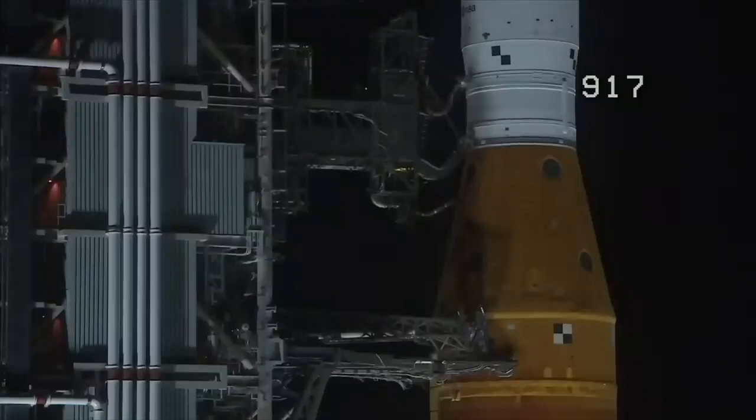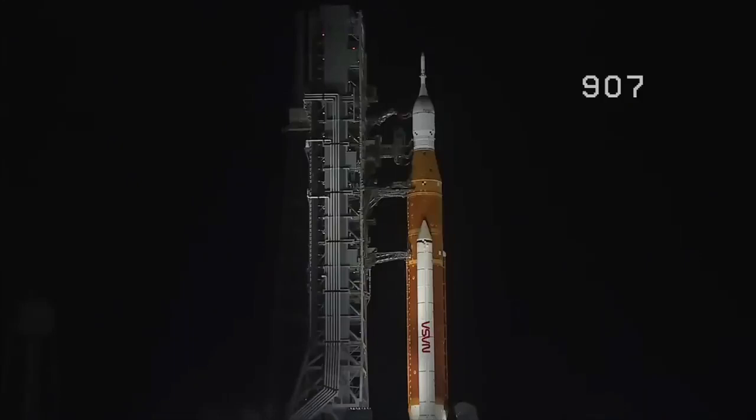T-50 seconds and counting. Coming up at T-33 seconds, the GLS will hand off control to the ALS. This is the autonomous launch sequencer on board the rocket. It will take over command and control of the rocket. But the ALS will check, make sure there's no holds coming from the ground up until T-2 seconds. GLS go for ALS. And we are go for ALS.